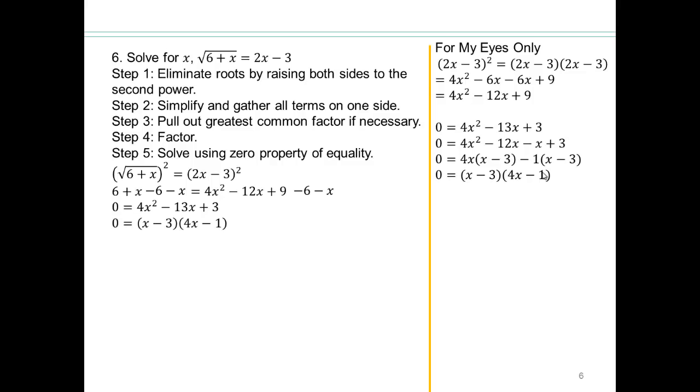All right. Once you have the factors, then set each factor to 0, solve for x, and those are your answers. But because, remember what we said, we got rid of a root. We squared both sides. So you might lose some information. So what do we have to do? Check your answers.